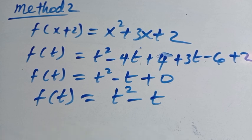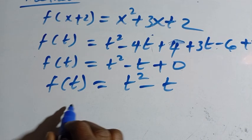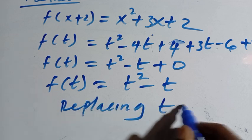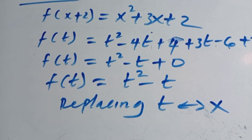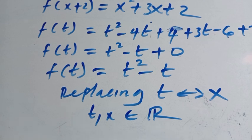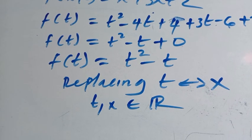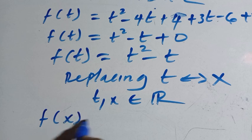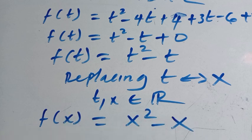And since what we need is f of x, we have to replace t with x. The reason we can do this is that both t and x are members of the real numbers, so it is easy to switch them and replace with the letter x. Therefore, we have f of x equals x squared minus x. We get the same result as the first method.